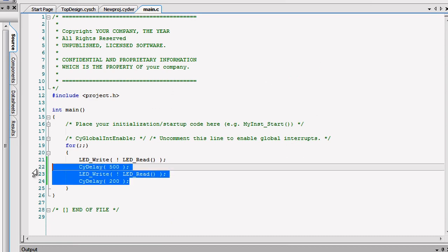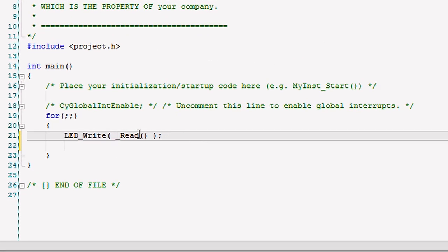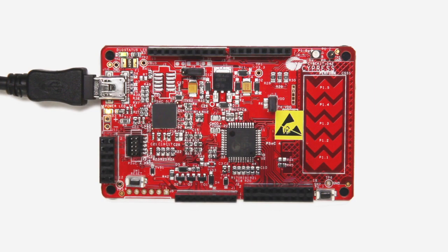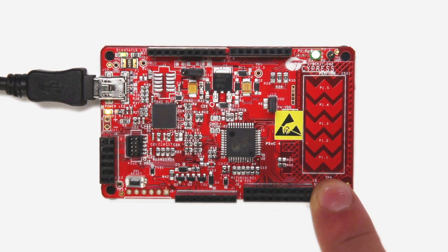When we generate the APIs for this design, we'll get code both for the LED and for the switch pins. Let's replace our previous code with a simple copy of the switch state into the LED. Now, when you build and program the PSOC, the LED only lights when you press and hold the switch.